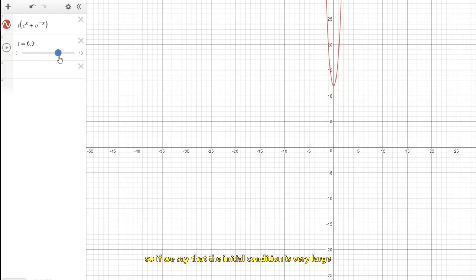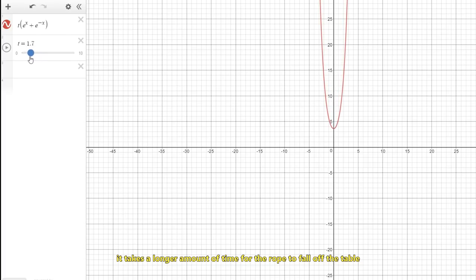So if we say that the initial condition is very large, meaning the rope is practically already hanging off the table completely, we can see that the time it takes for the entire rope to fall off the table is going to be really small when compared to this x-axis. And then as we decrease that initial condition, it takes a longer amount of time for the rope to fall off the table. And that even makes sense physically.